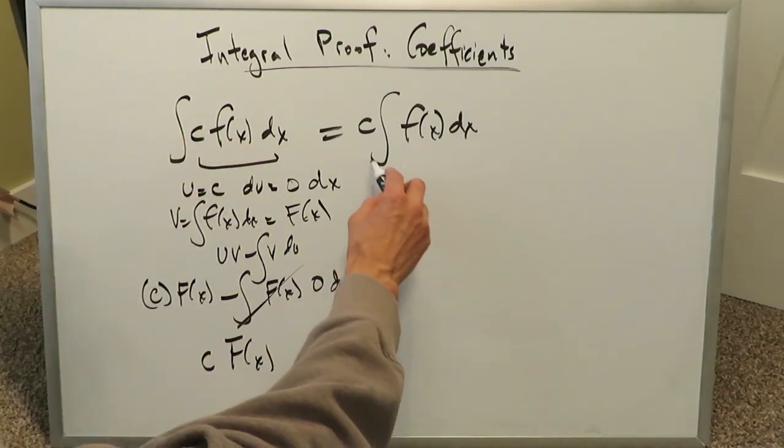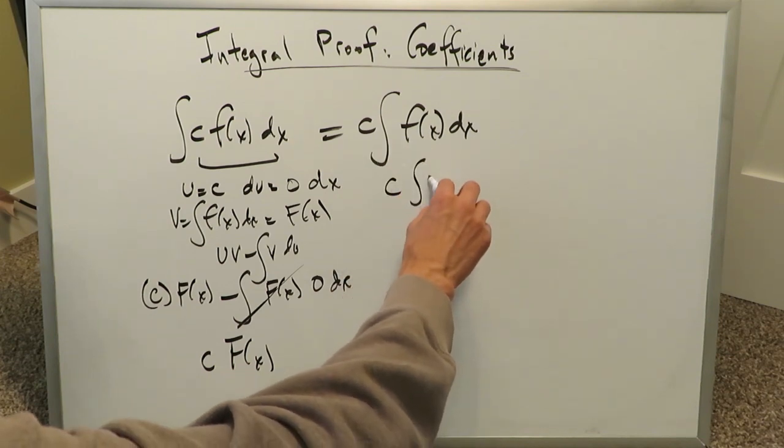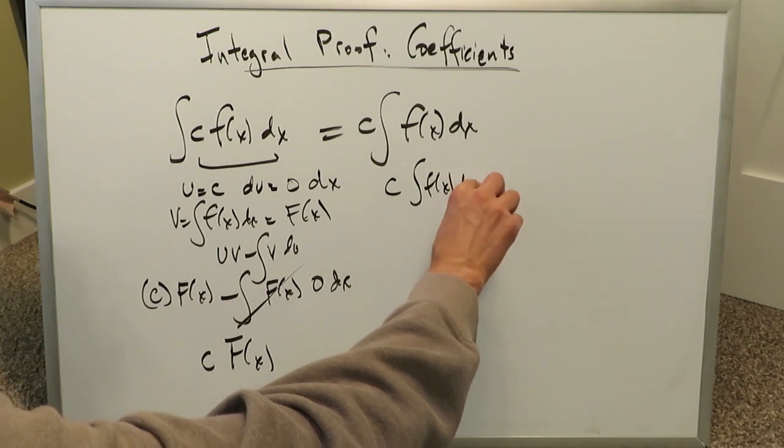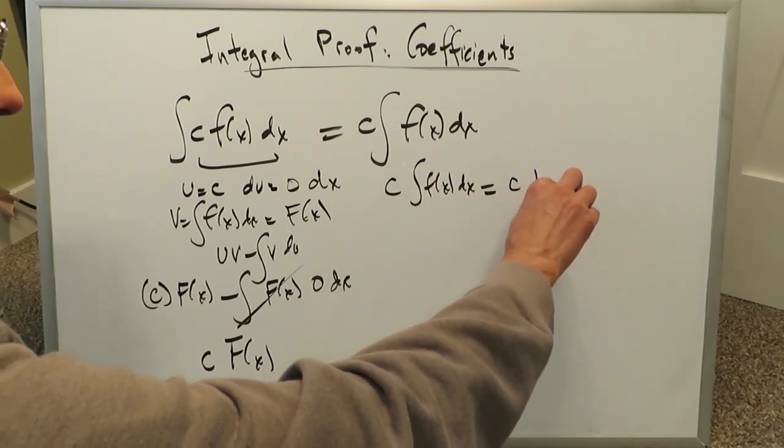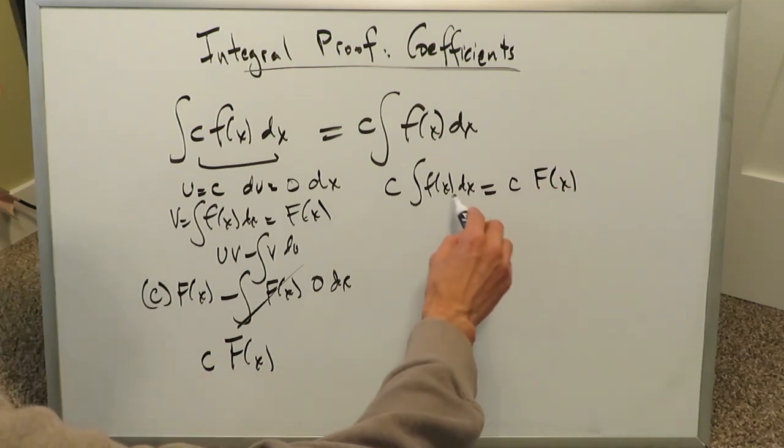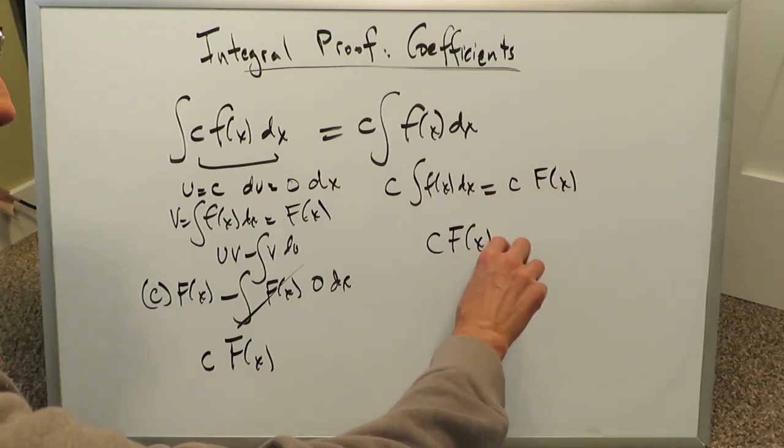When you look at this procedure right here, the constant is already out. Anytime you're doing an integral of something which is f of x dx, anything which appears like this in terms of an integrand comes out as a capital F of x. You can symbolize that as your anti-derivative. And you end up seeing c F of x.